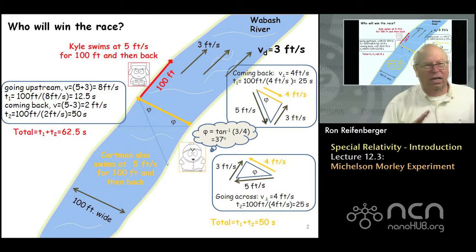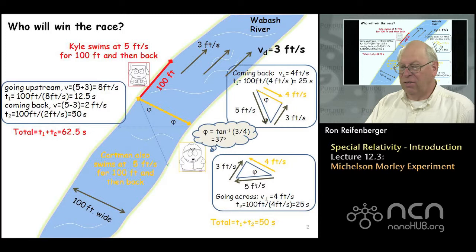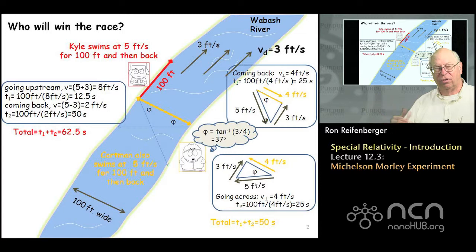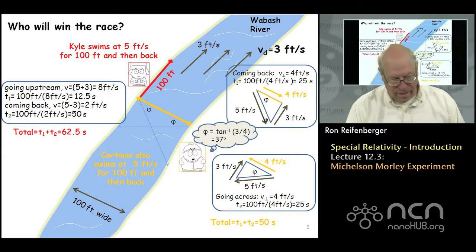If you understand this example, you can appreciate the logic behind the Michelson-Morley experiment. What they're going to do is launch a light wave, split it into two paths — one path directed parallel to the drift velocity of the ether, and the other path directed perpendicular to the drift velocity of the ether — and then measure in a very clever way the time difference for these light beams to travel.